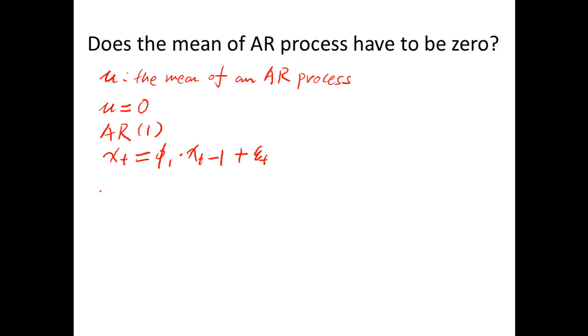When mu is not equal to zero, we should write an AR process like this. Xt minus mu equals phi 1 times parenthesis, Xt minus 1, and then minus mu, and then parenthesis. You see, when mu is not equal to zero, then when I write the equation, I have to use Xt minus 1 minus mu as well. And then at the end, we have the epsilon t component.